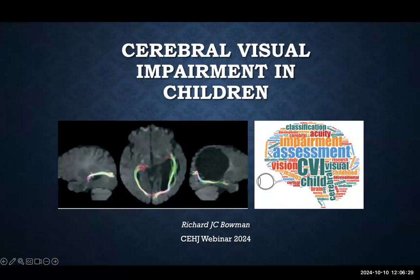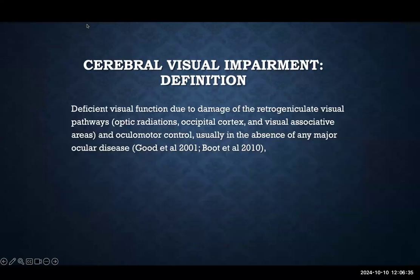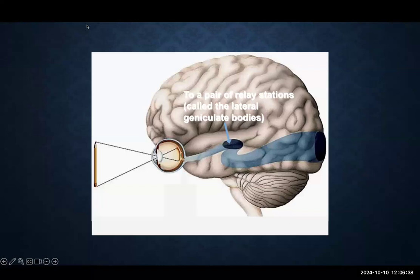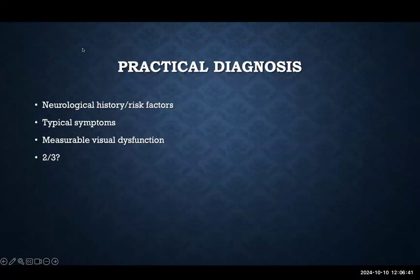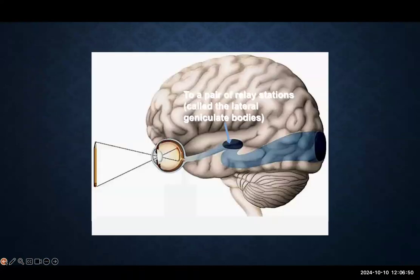Thank you. The slogan is 'children love your eyes,' but actually vision really occurs in the brain, not in the eyes. The commonest cause of visual problems in children these days, in all parts of the world, is actually problems with the brain — the visual pathways in the brain. 50% of the brain is used for processing vision. The main relay station is in the thalamus, the lateral geniculate nucleus, and we're talking about problems behind that in the posterior visual pathways.